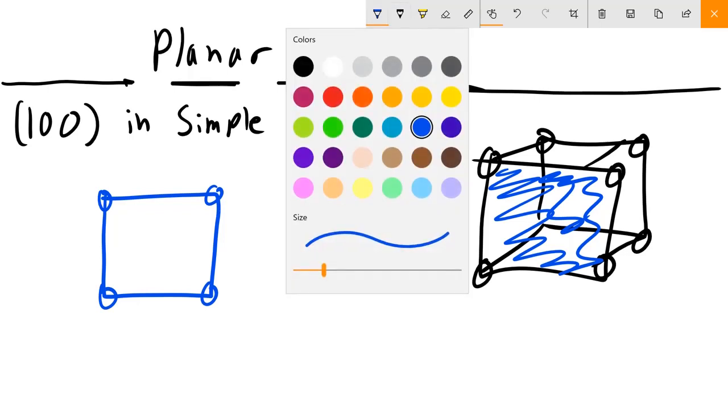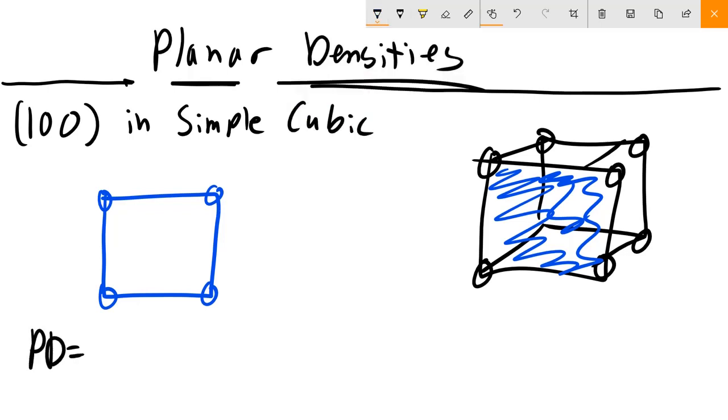So for my planar density, it is going to be the number of atoms times the area that's cut through. So this isn't the surface area of the sphere, it's the area that's kind of cut through by the plane. So it's just going to be number of atoms times pi R squared over the area of plane.